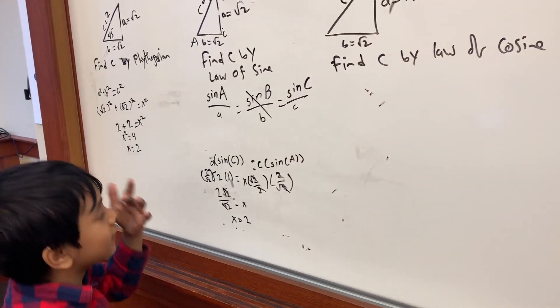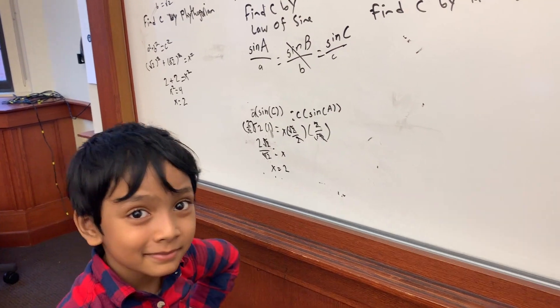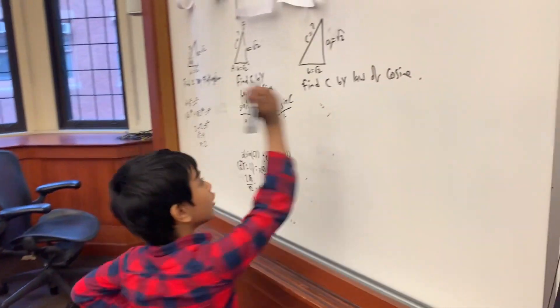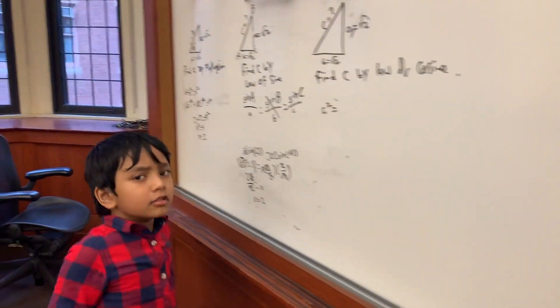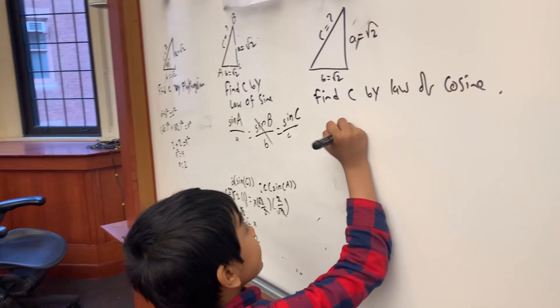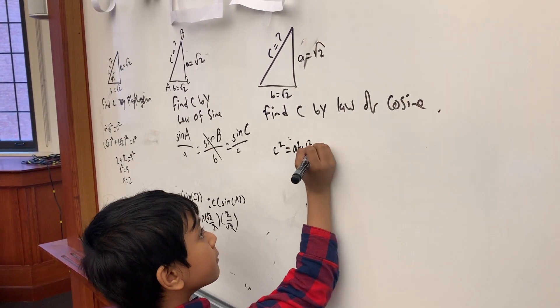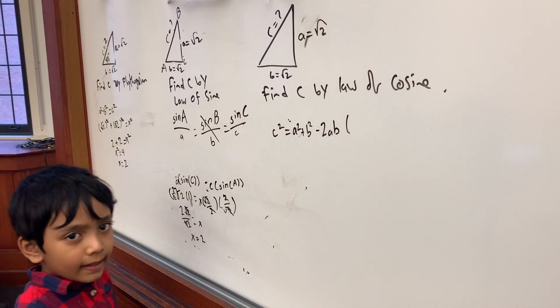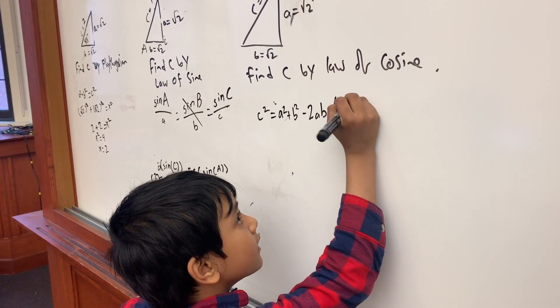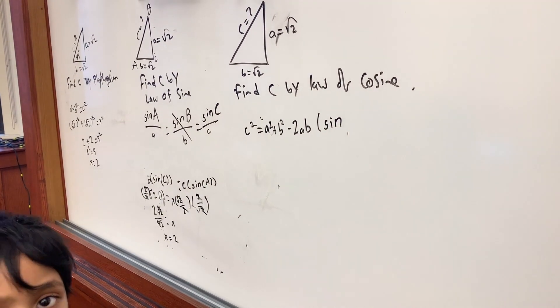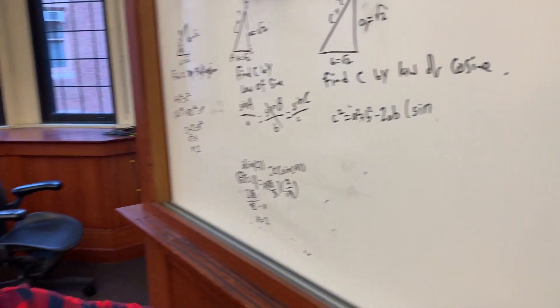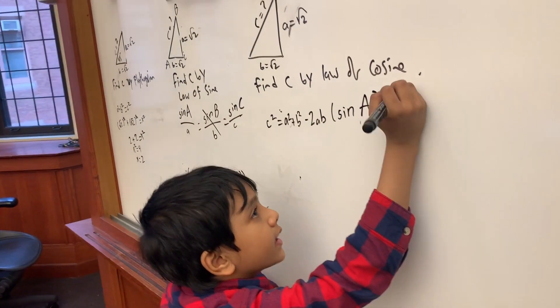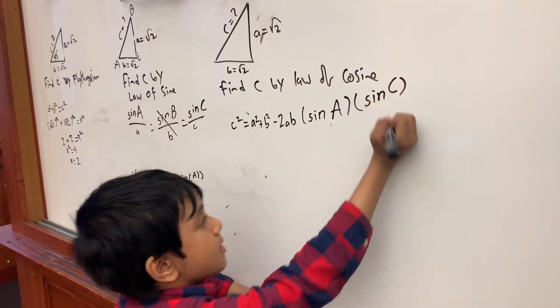Hmm, seems like there's another way to do it, huh? Now the third way to do it: find C by the law of cosine. B squared equals A squared plus B squared minus 2AB times sine A, sine B, sine C. But sine A and sine B we know they are the same, so let's just do sine A, sine C.